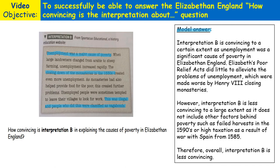Interpretation B is convincing to a certain extent, as unemployment was a significant cause of poverty in Elizabethan England. We know from our own knowledge that unemployment was a significant cause of poverty in Elizabethan England. To access those high marks, we need to show contextual own knowledge — for example, Elizabeth's Poor Relief Acts did little to alleviate the problems of unemployment, which were made worse by Henry VIII closing monasteries. This shows good own contextual knowledge about why there was increased poverty in Elizabethan England.